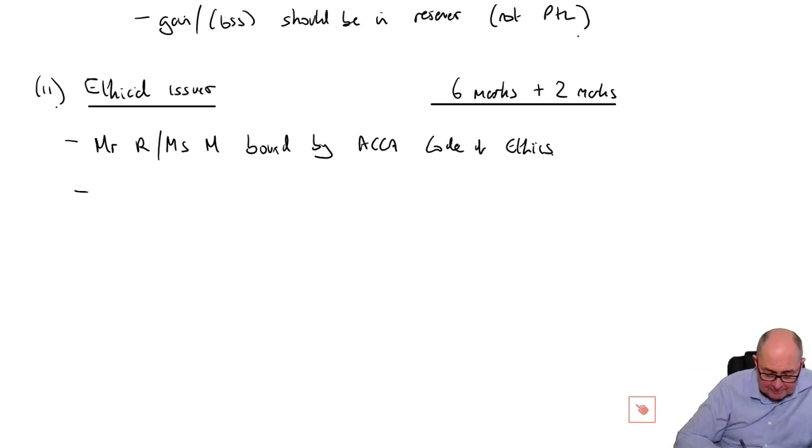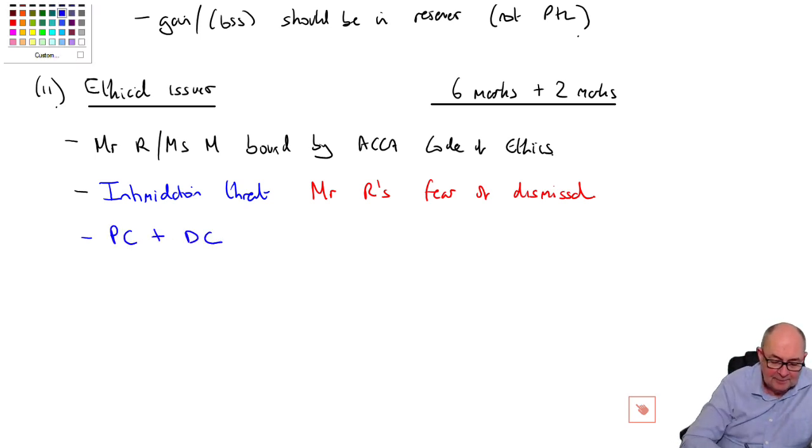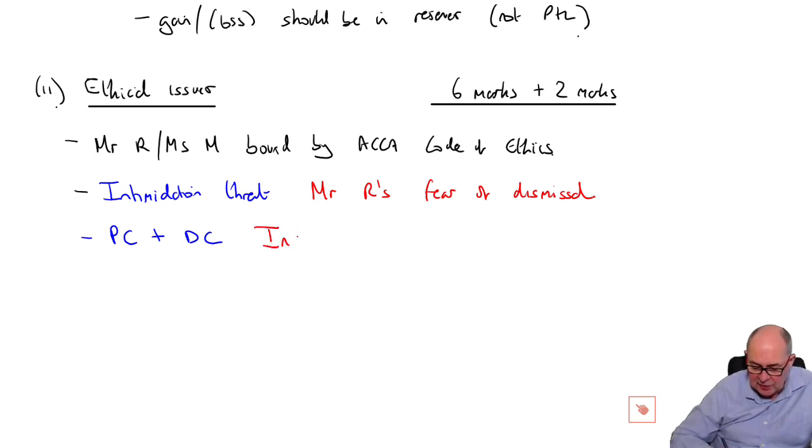And then look all the way through the scenario. It may not be as well structured as the answer. It doesn't matter. If you end up with six points and they feel a little bit random, I don't think it matters as long as you're linking knowledge to a specific ethical threat or a specific ethical principle. So, for example, we can think about raising the threat of intimidation because poor Mr Ravi is suffering under fear of dismissal. He got the accounting treatment wrong. That's professional competence and due care. That is the use of the incorrect accounting treatment.